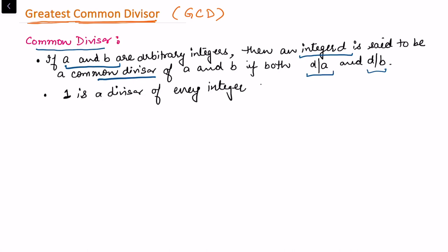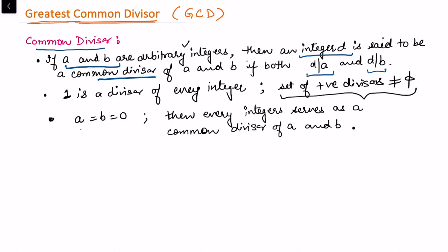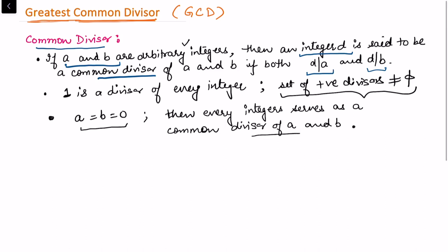If d divides both the integers, we will call this a common divisor. And since 1 is a divisor of every integer, we can say that the set of positive divisors is always non-empty.